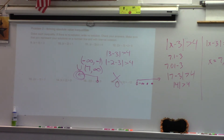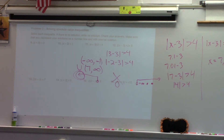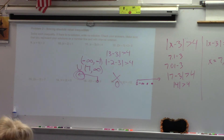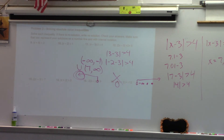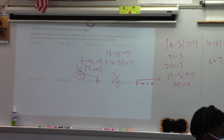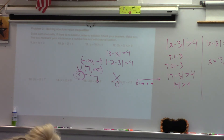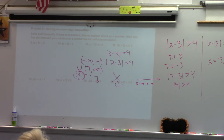Before I even get started, do you think the points should be open or closed? Closed — because it says greater than or equal to, and negative 5 was a solution. Now I need to figure out where the rest of my solutions are. Let's test negative 8: absolute value of negative 8 plus 8 — is that greater than or equal to 3? No, so probably nothing in the middle. What about to the right? Let's test 0: absolute value of 0 plus 8 — is that greater than or equal to 3? Yes, so things to the right are probably solutions.